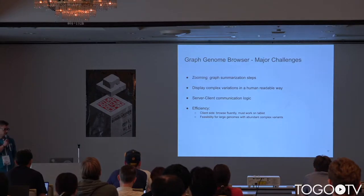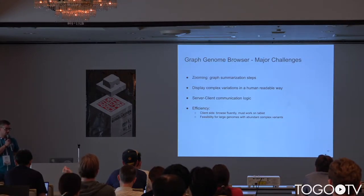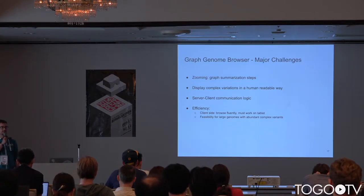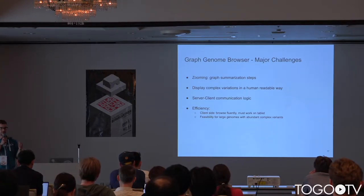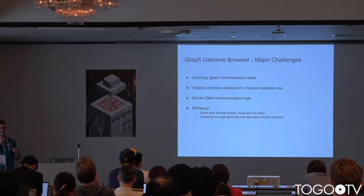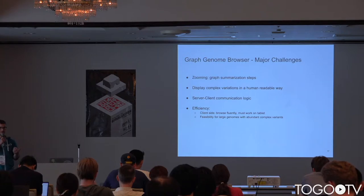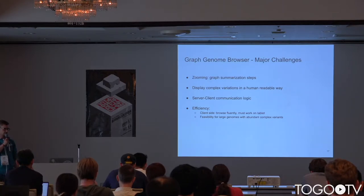Currently we are facing these challenges. The first big thing would be to find a way to zoom efficiently and summarize the graph in certain steps. Also, we want to make sure that we are able to display complex variations in a human-readable way, because sequence tube maps can do that to a certain extent, but if it gets too complex, it also has its limits. We also need a clear server-network and client communication logic, well documented. On the client side, the user must be able to browse the graph very frequently, even on templates, and our tool must be feasible for large genomes with abundant complex elements.